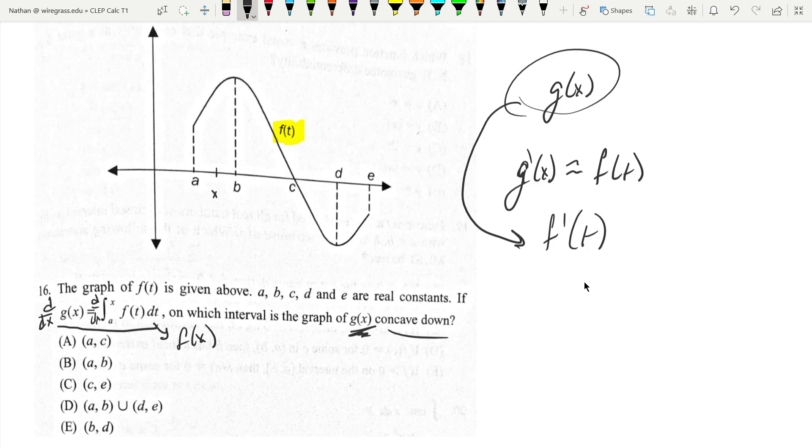And concavity, right, depends on when the second derivative is negative. Well, that's the same thing as asking, when is this derivative negative of f of t?